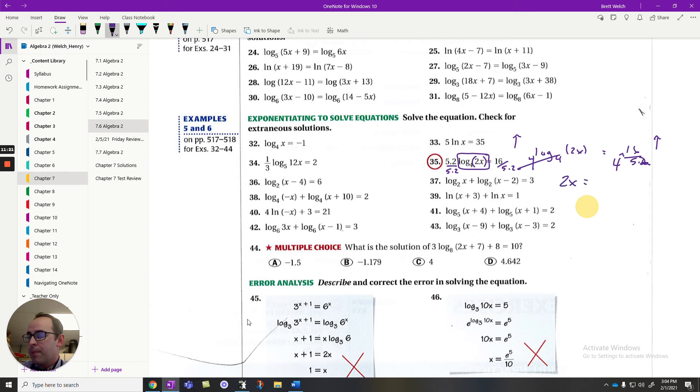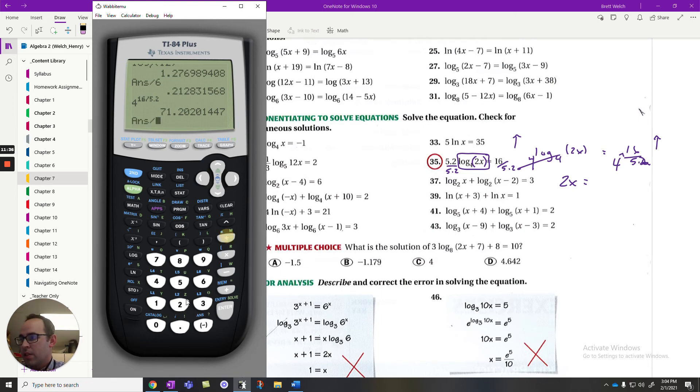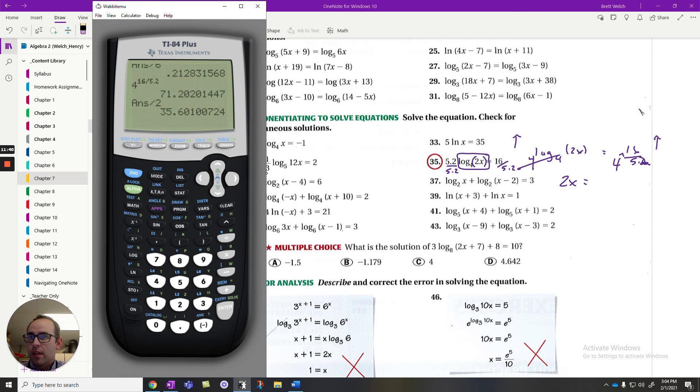But this, I've got to put in the calculator correctly. It's 4 raised to the 16 divided by 5.2. And if I evaluate that, I get 71.2. Obviously, I still have to divide this by 2 to finish the problem. And I end up with 35.6. So x would equal 35.6.